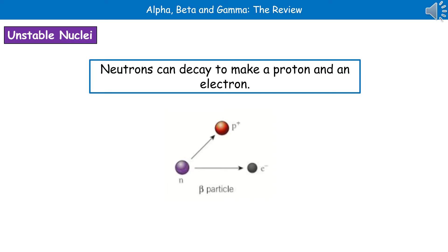When we're considering decay, unstable nuclei undergo this process of decay. The reason that electrons are given off as one of these types of radiation is that the neutrons that make up the nucleus are not stable. The neutron itself can decay to make a proton and an electron — hence where the beta particle comes from.